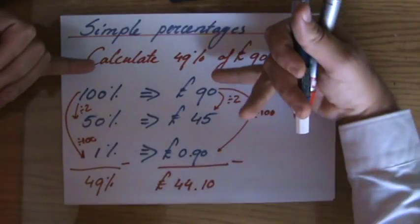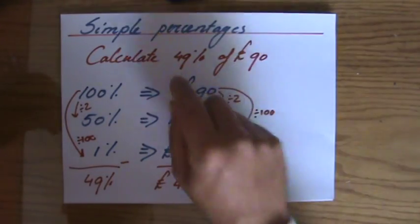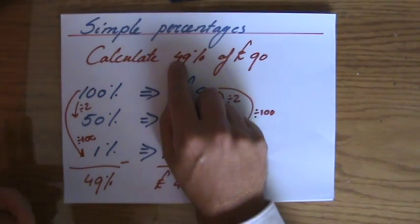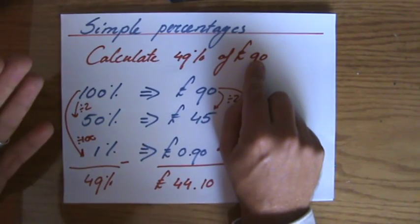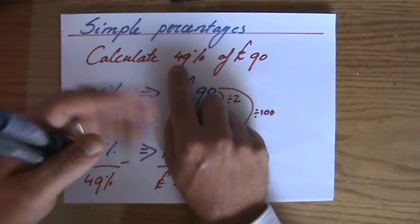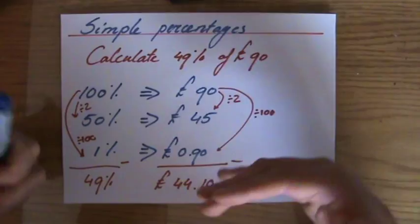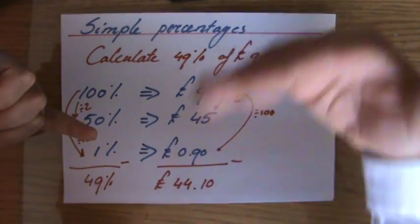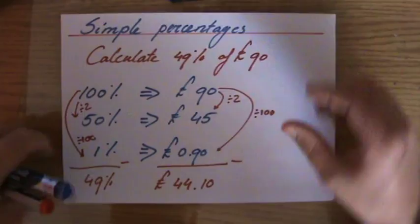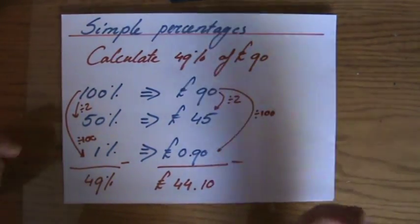That is just one way of doing it. Perhaps you did—find 10% first by dividing it by 10, then multiply it by 4 to get 40%. Then you found 1%, multiply that by 9 to get 9%, then you added everything. That is fantastic as well, that's just another way of doing it.